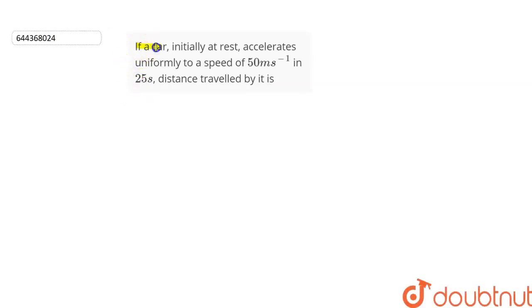The question is: If a car initially at rest accelerates uniformly to a speed of 50 meters per second in 25 seconds, then we have to calculate the distance travelled by it. Let's find out.